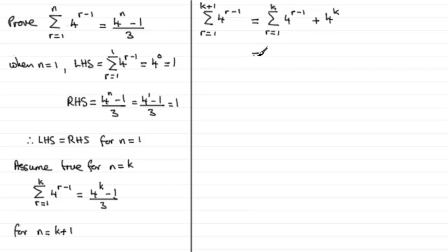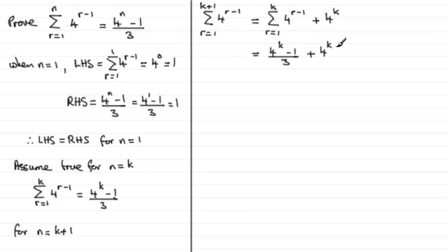Now what does this equal? We've assumed that the sum of the first k terms equals 4 to the power k minus 1, all divided by 3. So writing that in: 4 to the power k minus 1 divided by 3, plus 4 to the power k, that last term. To prove this is true for n equals k plus 1, we need to put this all over one common denominator of 3.